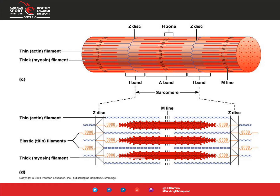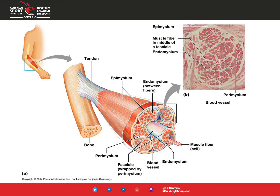To start, we'll cover some anatomy and physiology. This is a muscle fiber — we have our thin actin filaments and our thick myosin filaments. This is called the sliding filament theory. The thick filaments have little arms that grab onto the thin filaments and pull them towards the M line, causing the muscle to get shorter. The muscle then pulls on the tendon, which transfers that force to move the bone — that's how we create movement.